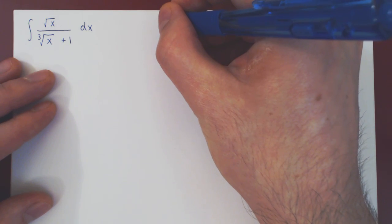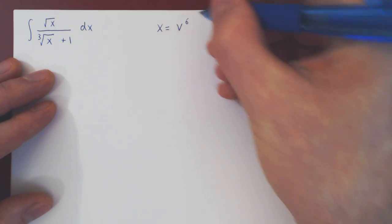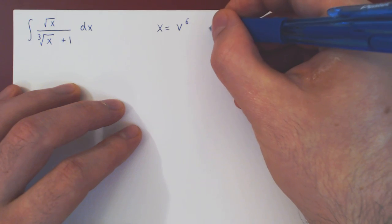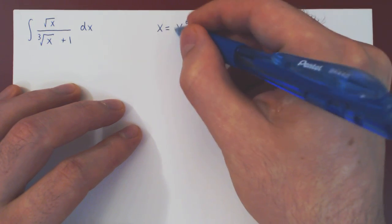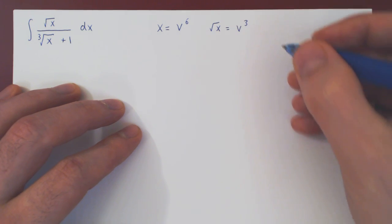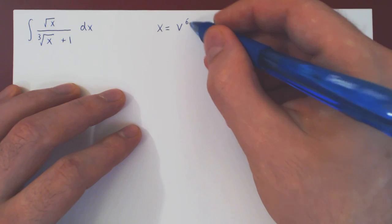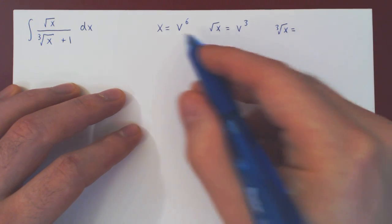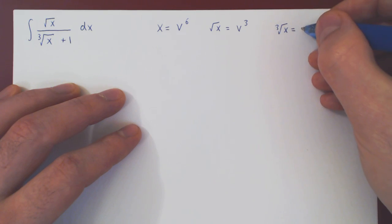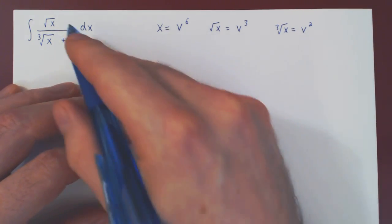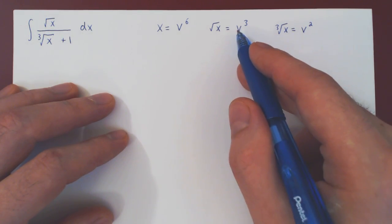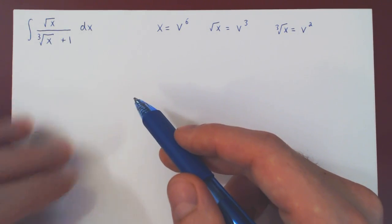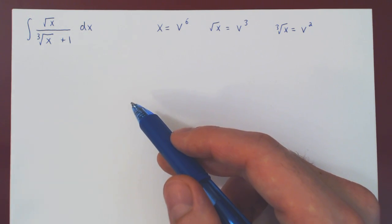So our substitution now is that we let x be v to the 6. And we can verify again that this will produce the desired result. So the square root of x will be the root of v to the 6, which is, of course, v cubed. Because if you divide 6 by 2, you get 3. And the cube root of x will be v squared. And so you see, with this substitution, the square root returns an integer power of v, and the cube root also returns an integer power of v. So this will become a rational function, which we can then integrate systematically with our method of partial fractions.